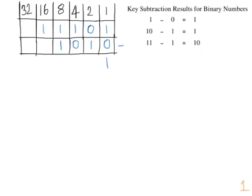Looking at the next column, we have a zero take away a two. We don't have any negatives in binary, so we are going to have to take something from the next column along. In the next column we have a four, so if I cross that one out and put a one in this column instead — moving it across one — zero in binary means two, so now we have got two twos, which is equivalent to our four from the next column over.